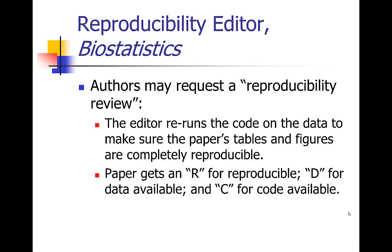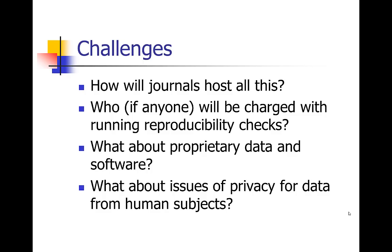If he can, the paper gets a little flag with an R on it — it also gets a D because the data are available, and a C because the code is available. So journals are trying to make some attempts to implement this, though there are a lot of challenges in implementing this kind of system.